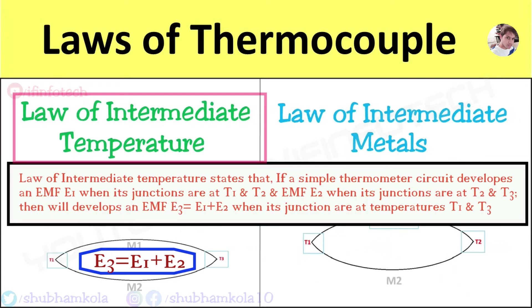This law is used for correction to thermocouple readings when the cold or reference junction temperature is different from the temperature at which the thermocouple was calibrated.